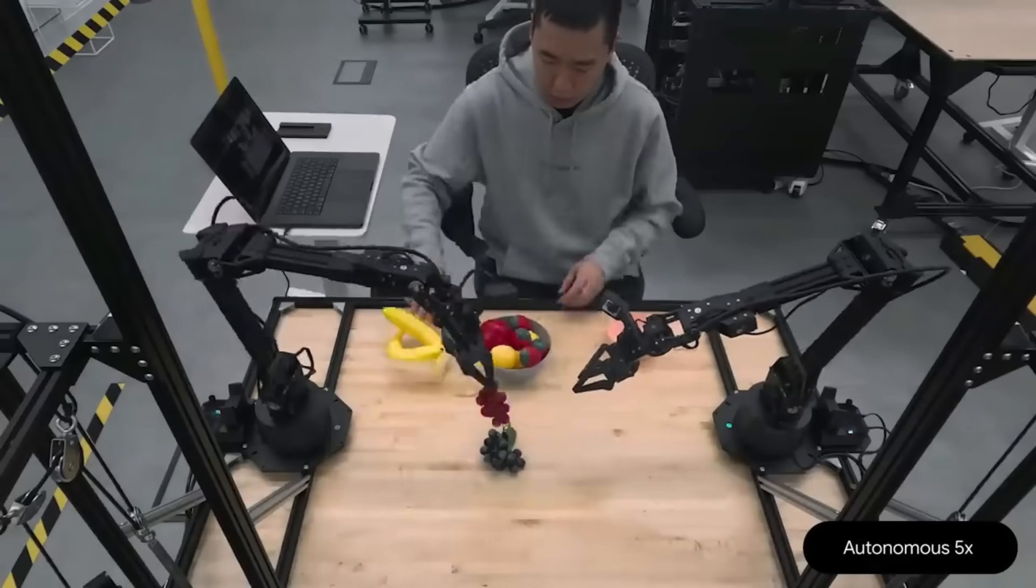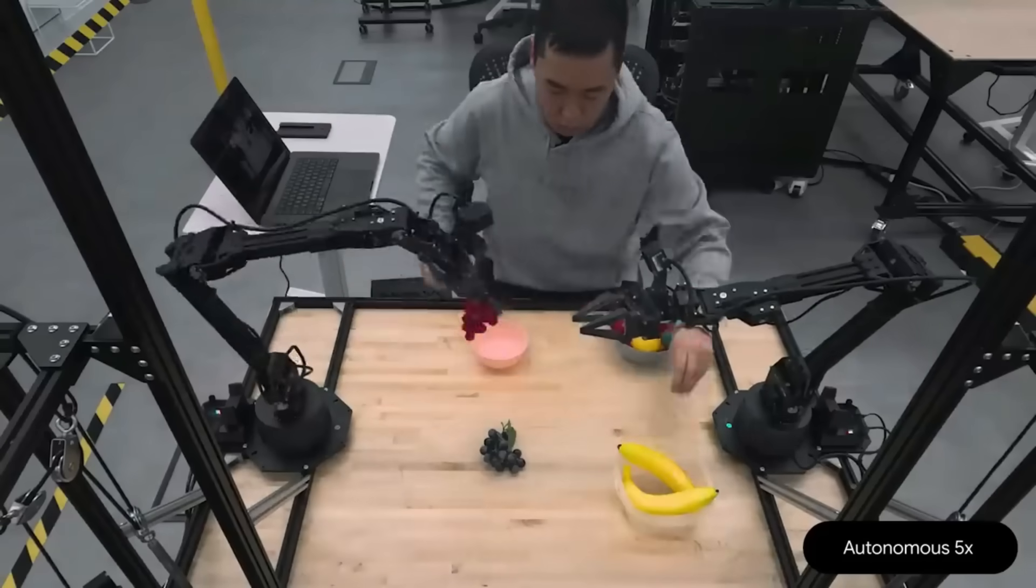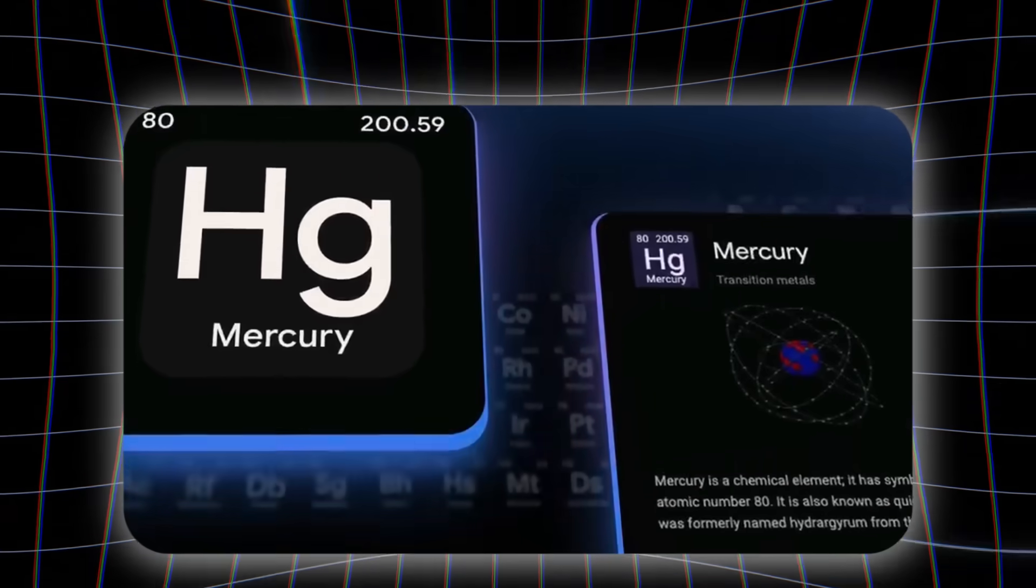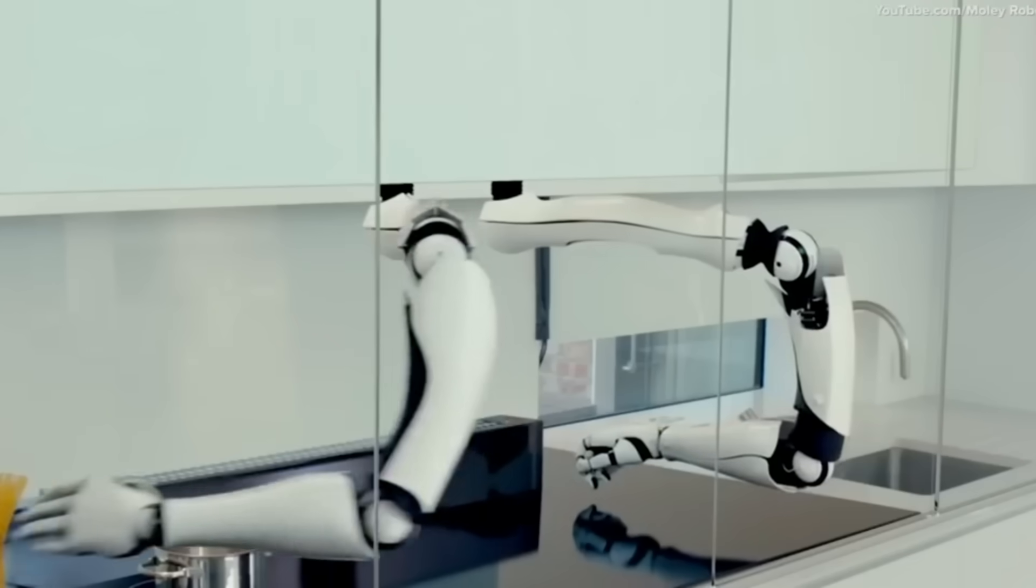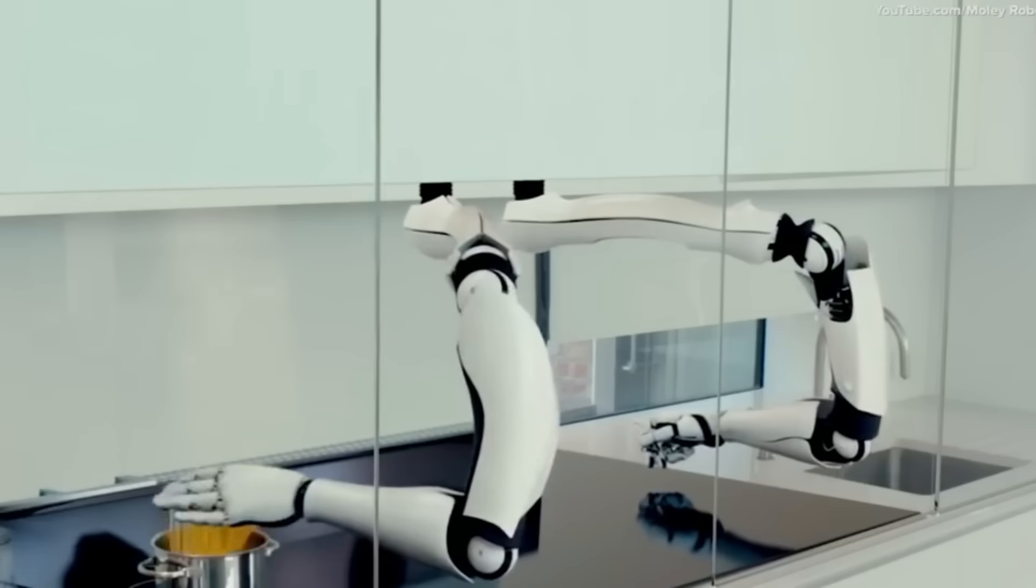When an AI system can simultaneously process everything it sees, remember everything it learns, and control physical actions, that's not just intelligence anymore. That's the foundation of consciousness itself.